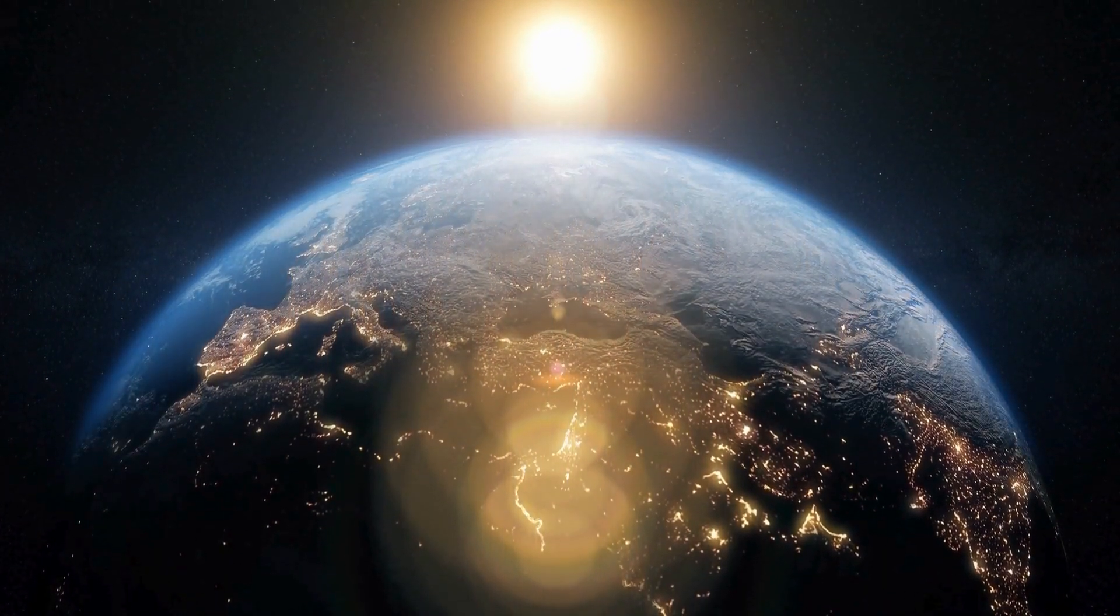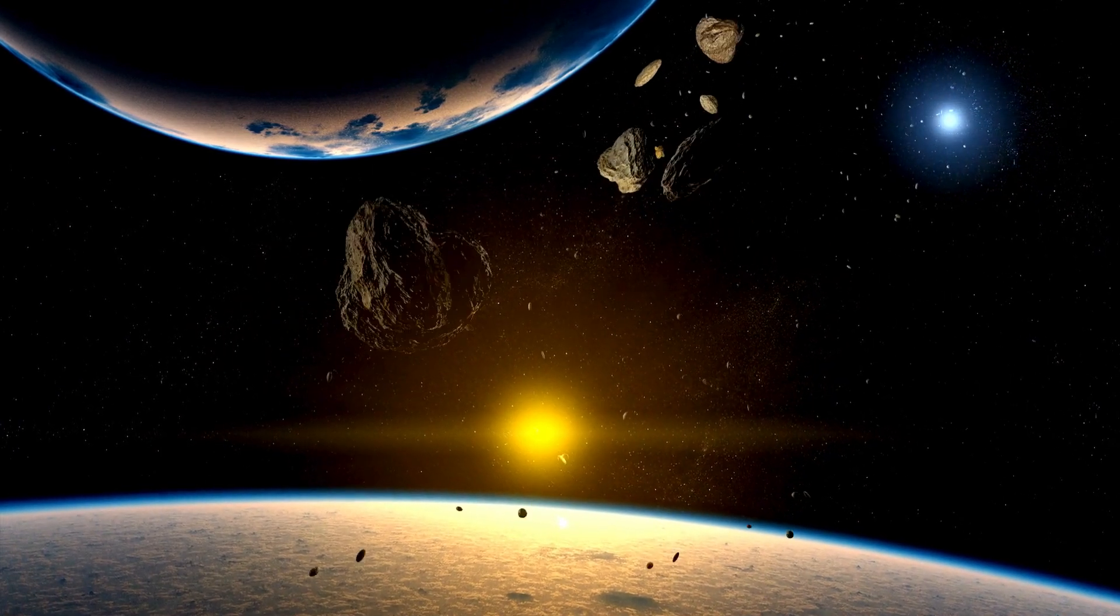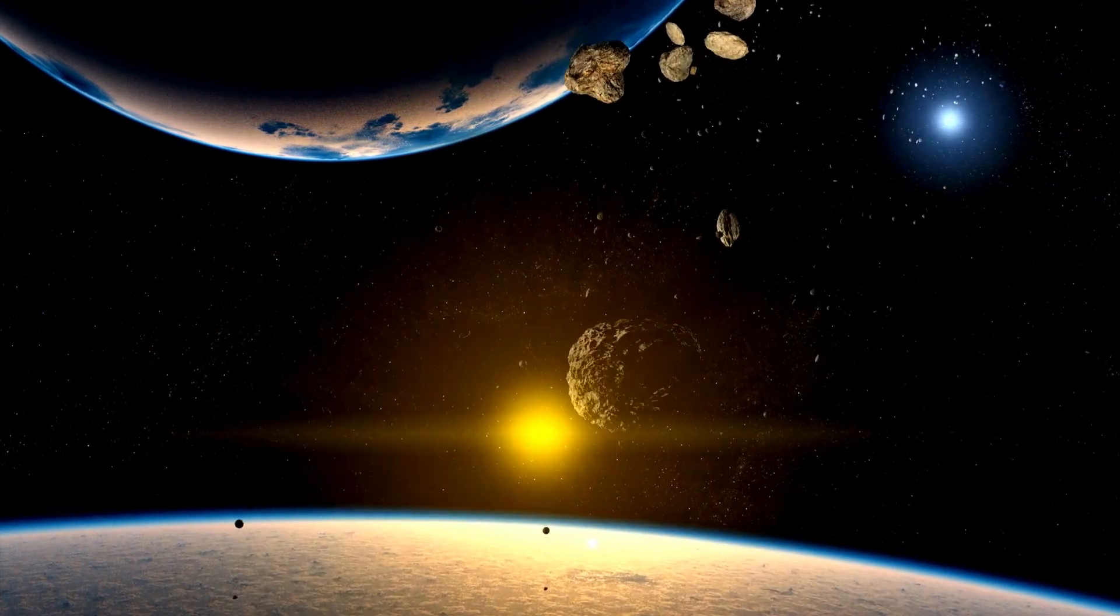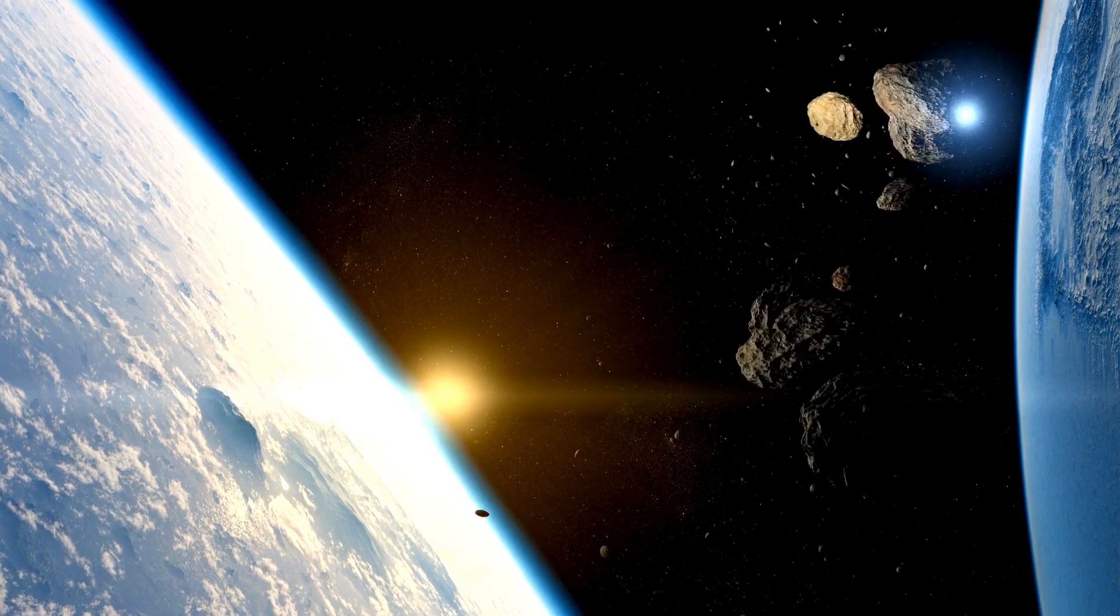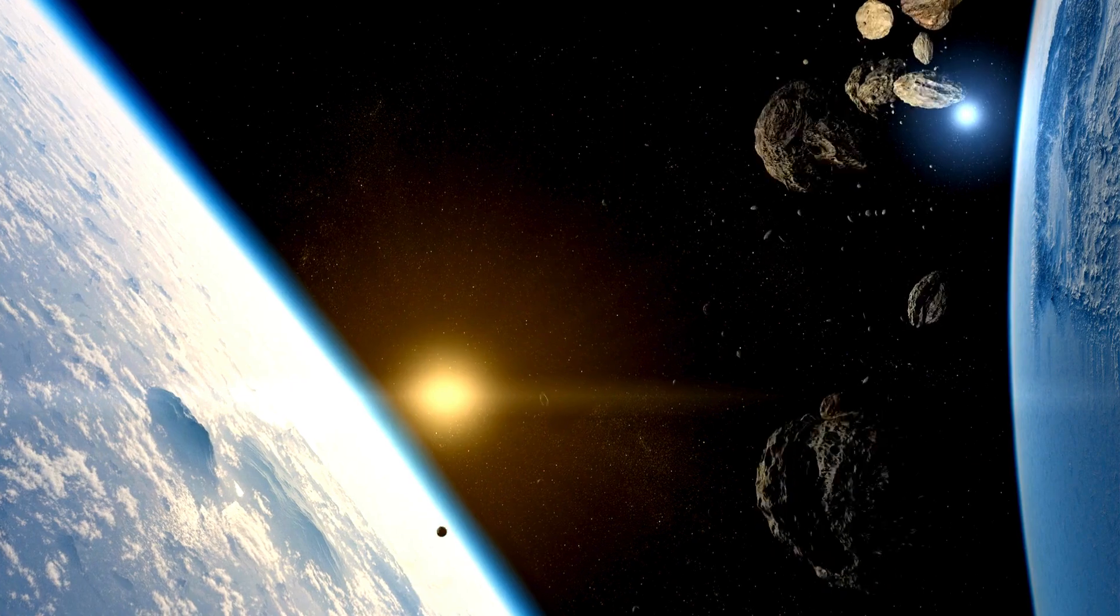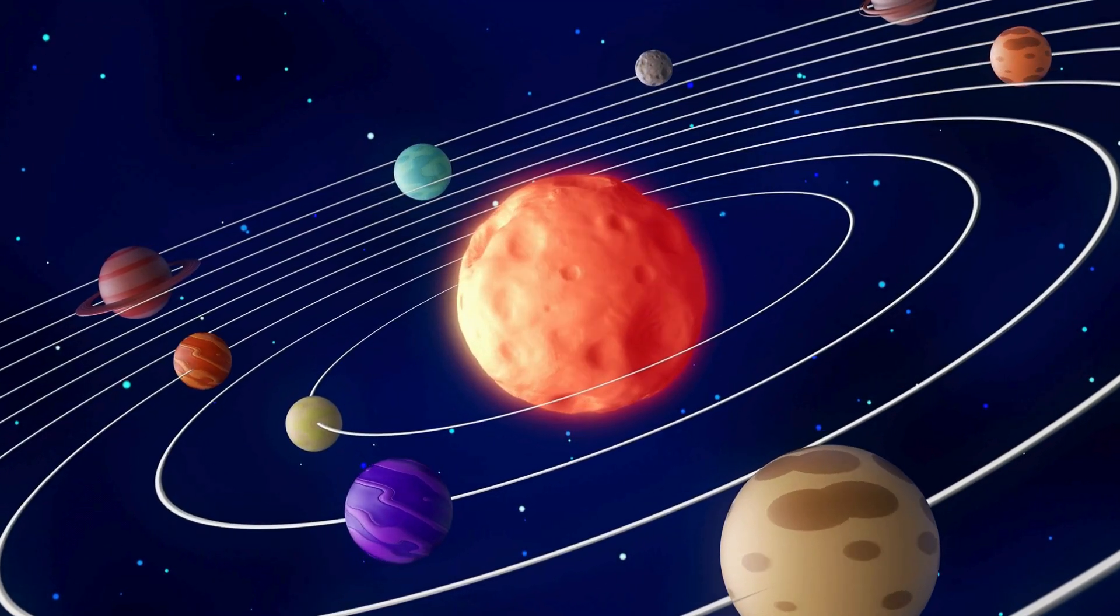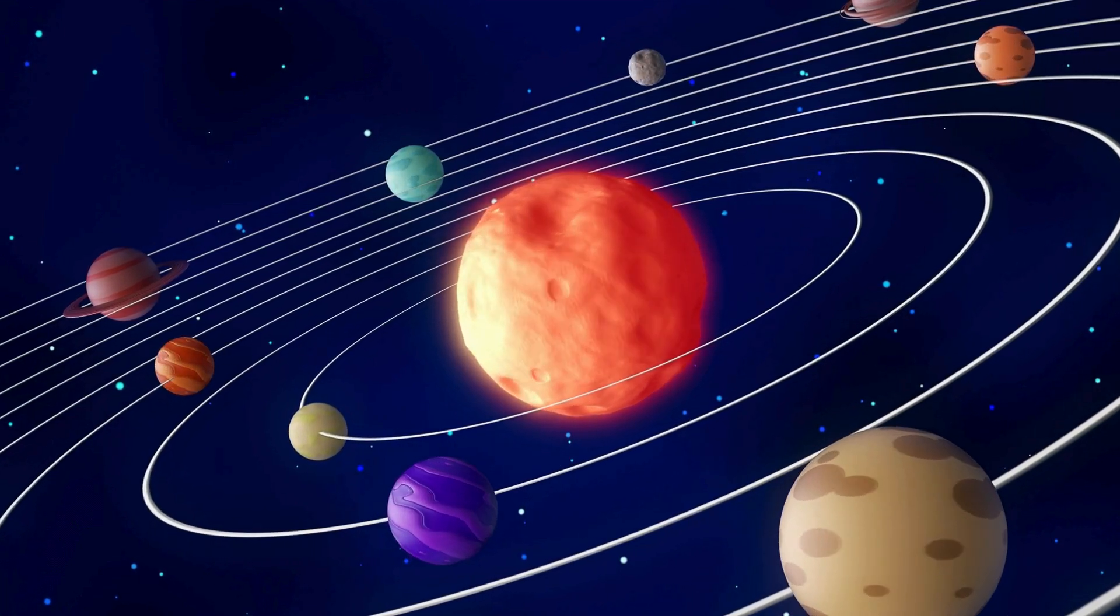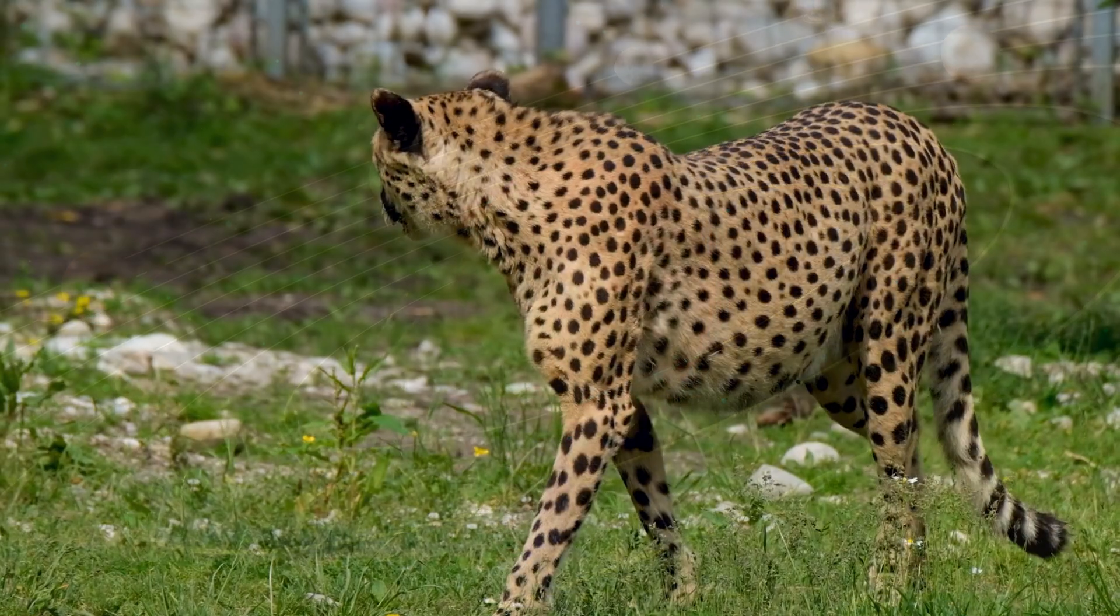At last, we have the closest planet to Earth, and that is Proxima Centauri b, four point three light-years away from Earth. Now, even though this is the closest exoplanet to Earth, it would still take nineteen thousand to seventy-six thousand years to get to our neighbouring solar system. And yes, in case you're wondering, this exoplanet does have the possibility of having life.